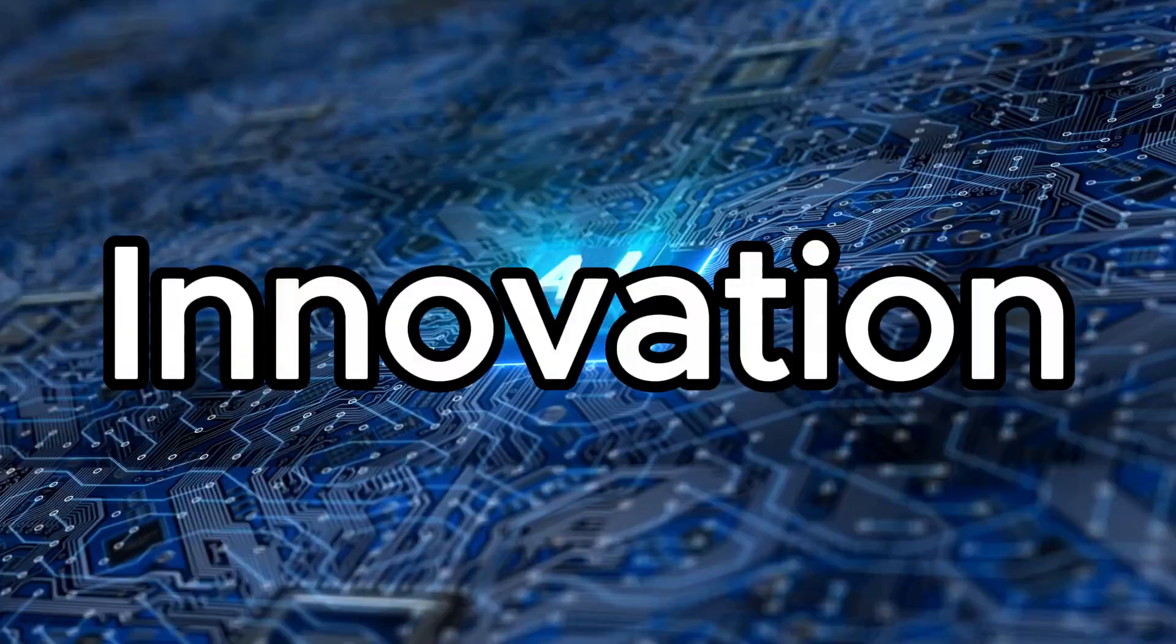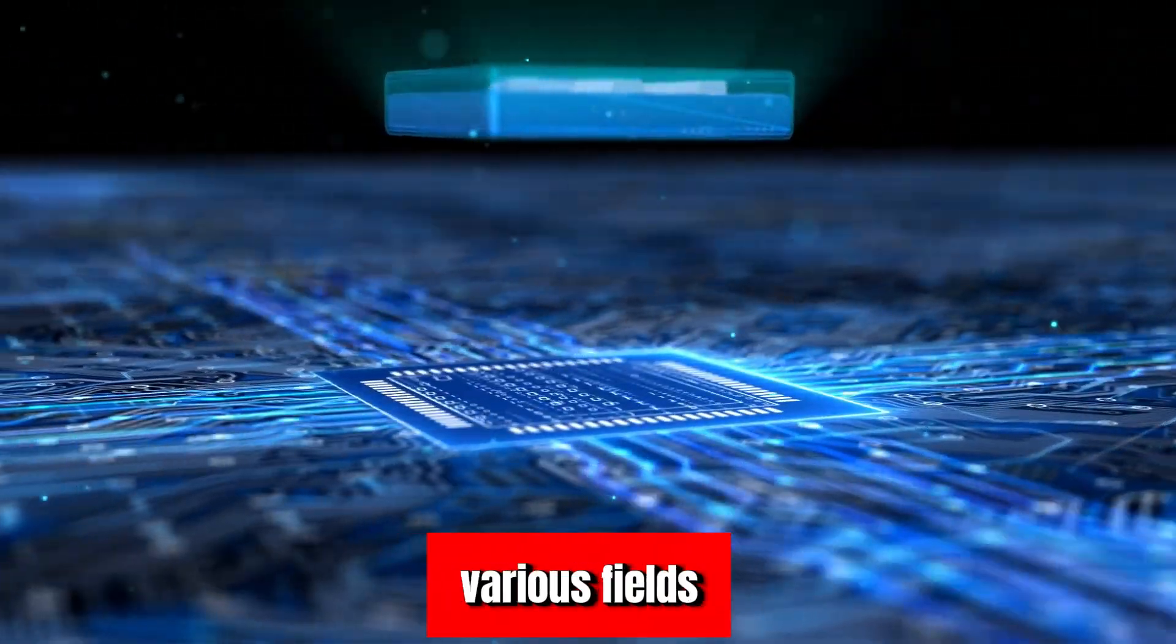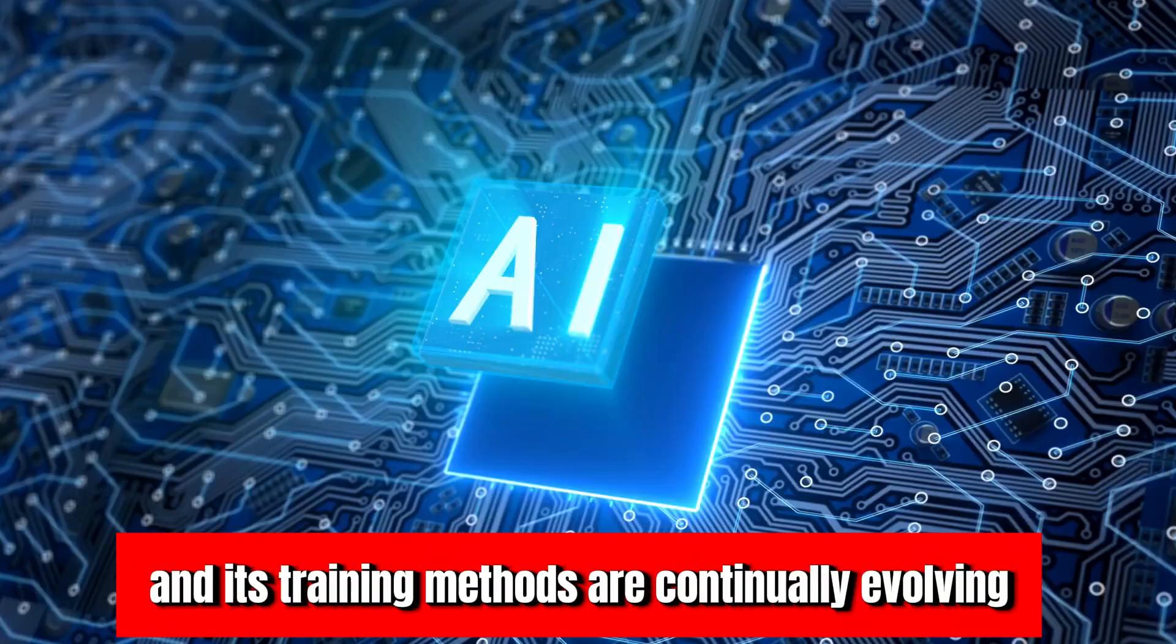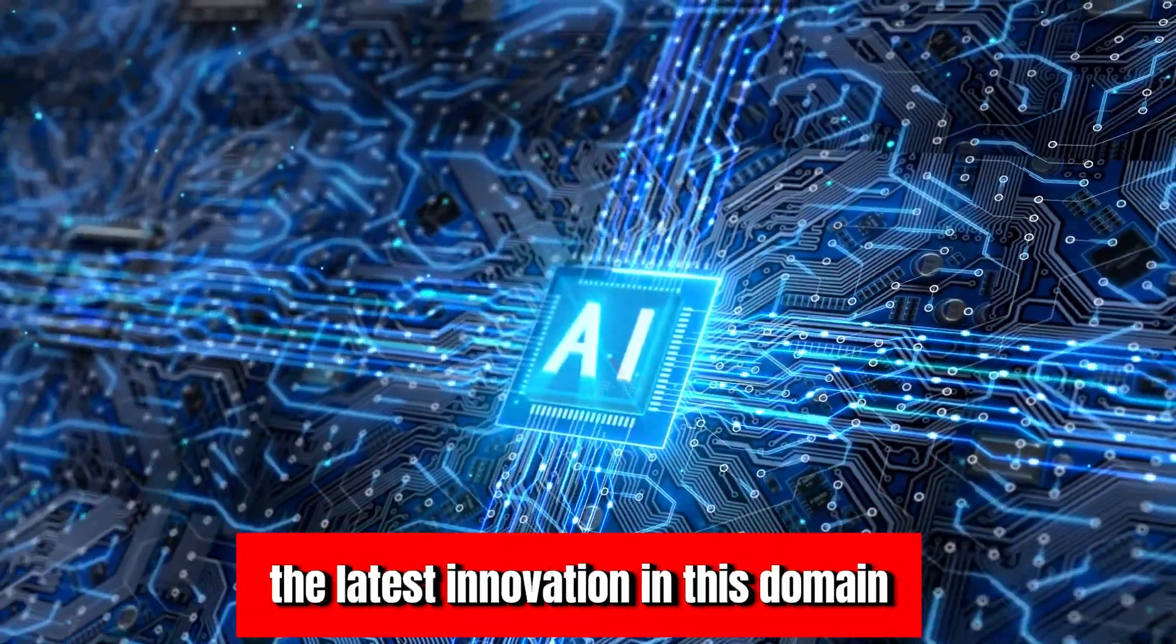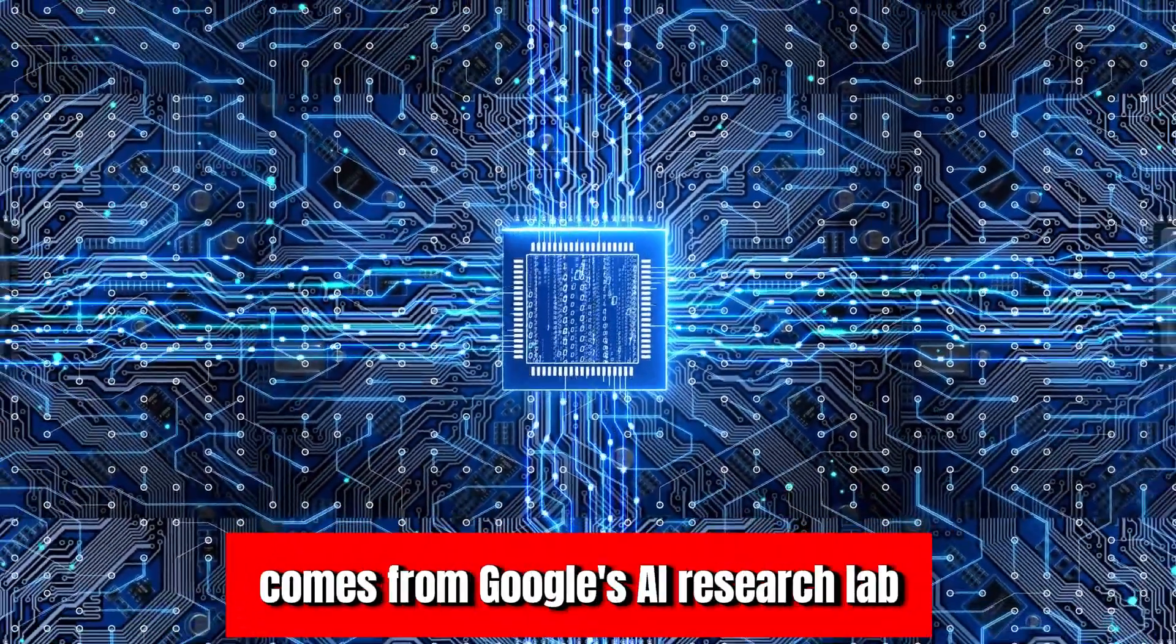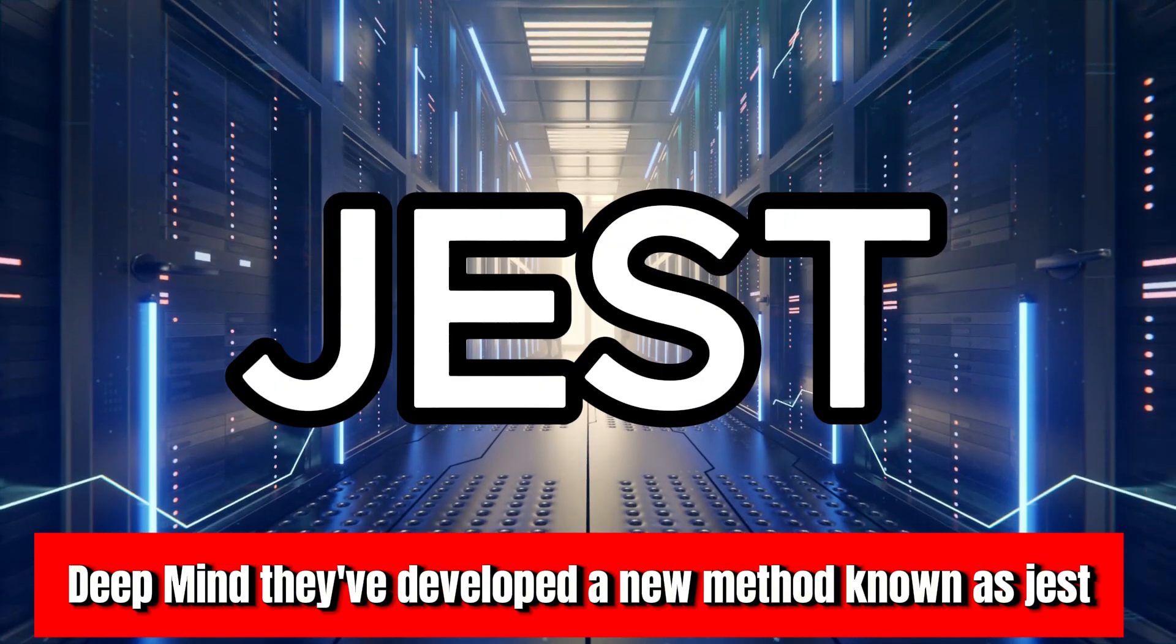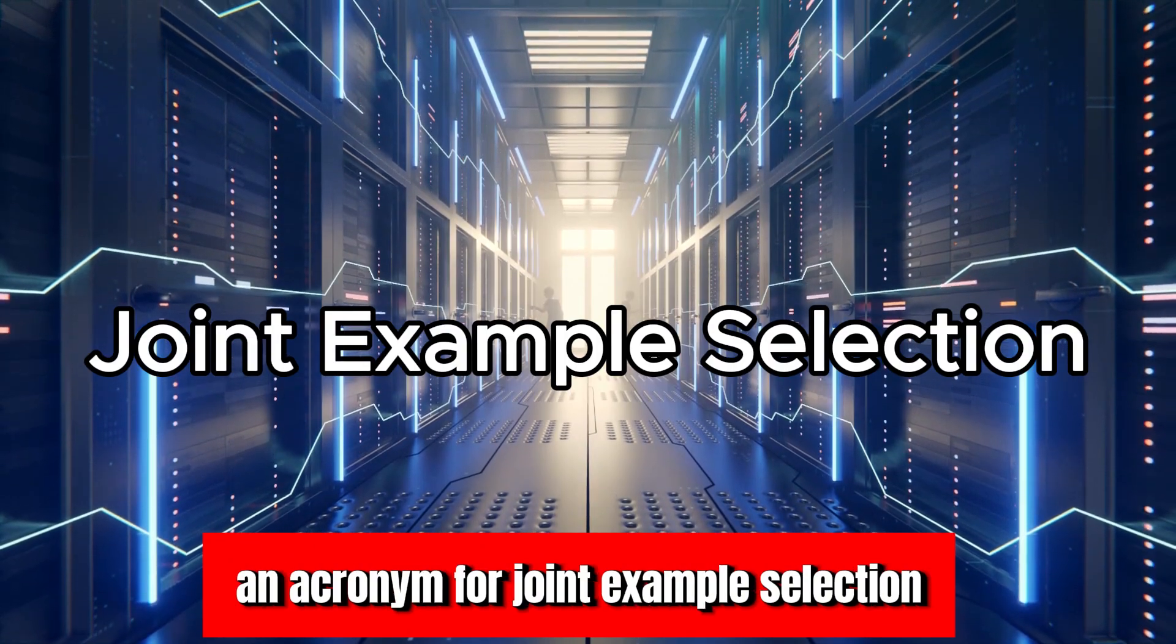Firstly, let's talk about the innovation. Artificial intelligence has been a game-changer in various fields, and its training methods are continually evolving. The latest innovation comes from Google's AI research lab, DeepMind. They've developed a new method known as JEST, an acronym for Joint Example Selection.